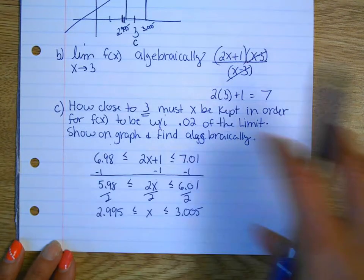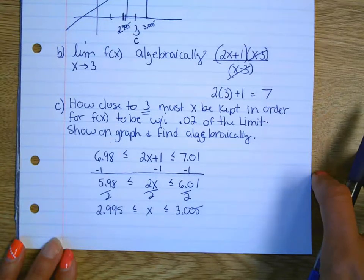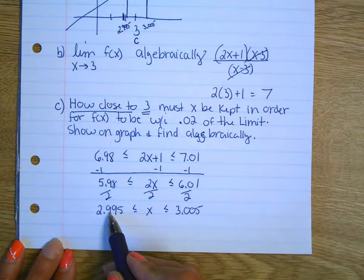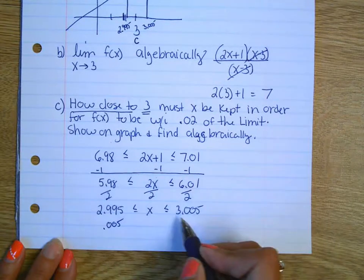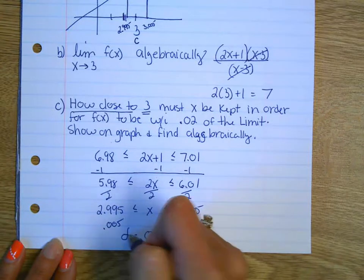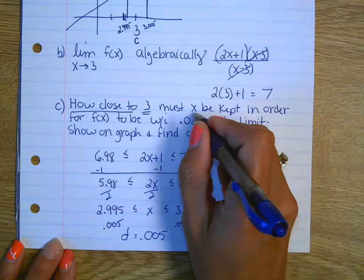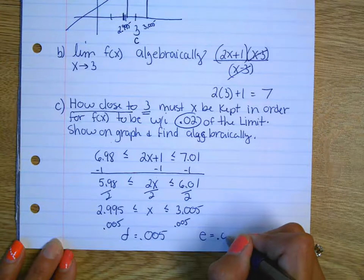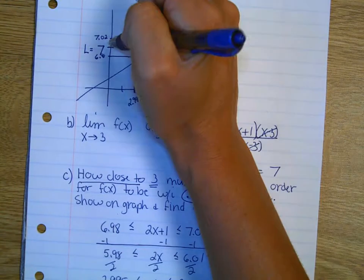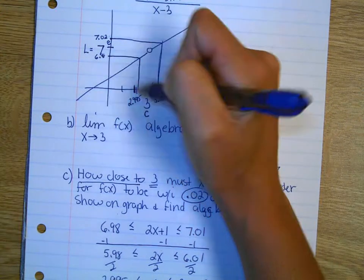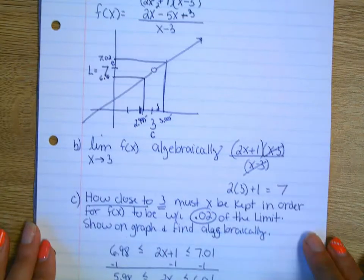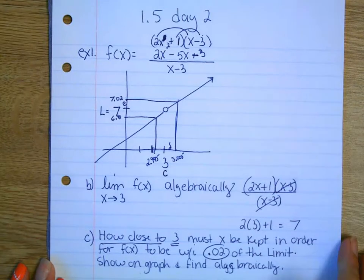So algebraically, I would show the factoring like I did up there. 2x plus 1 times x minus 3 over x minus 3. Cancel. Now I can substitute 3 in for the x to see what the y value is going to be. So now I just show 2 times 3 plus 1. 7 is my limit. So now I know that this hole is right at 7. So my c value is 3. My l value is 7.